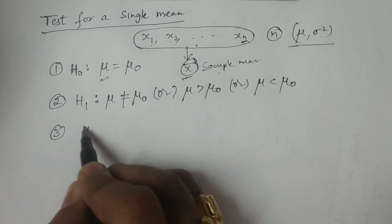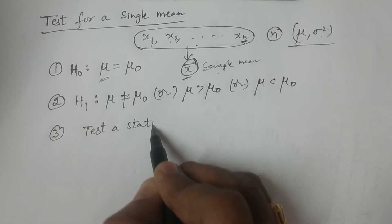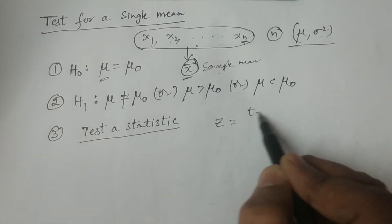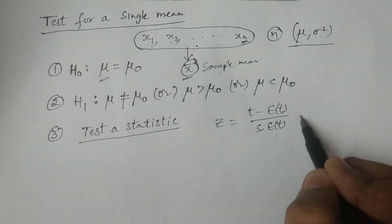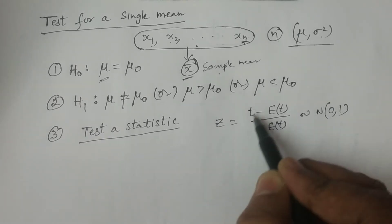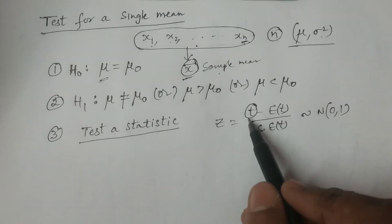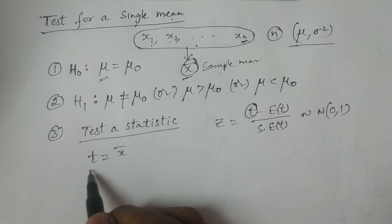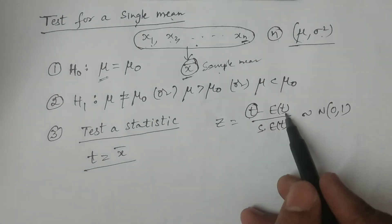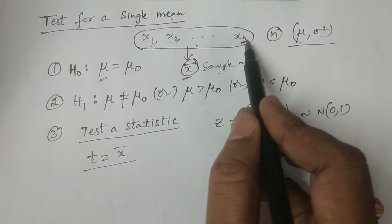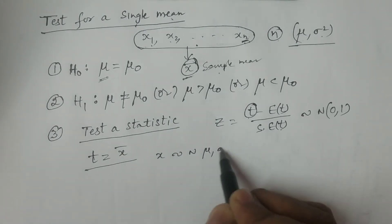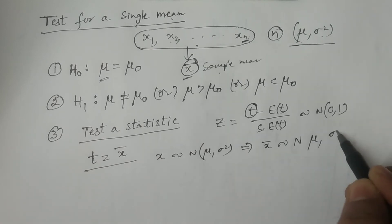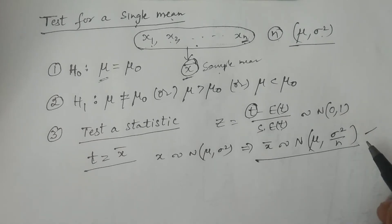The third one is the test statistic — another important part. In consideration of the test statistic, z is equal to t minus expectation of t divided by standard error of t, for any kind of test statistic. For a single mean, the statistic t is taken as x̄, the sample mean. So we need to calculate expectation of x̄ and the standard error of x̄. As we know, if x follows a normal distribution with mean mu and variance sigma square, then x̄ also follows a normal distribution with mean mu and variance sigma square by n. This is an already proved fact.